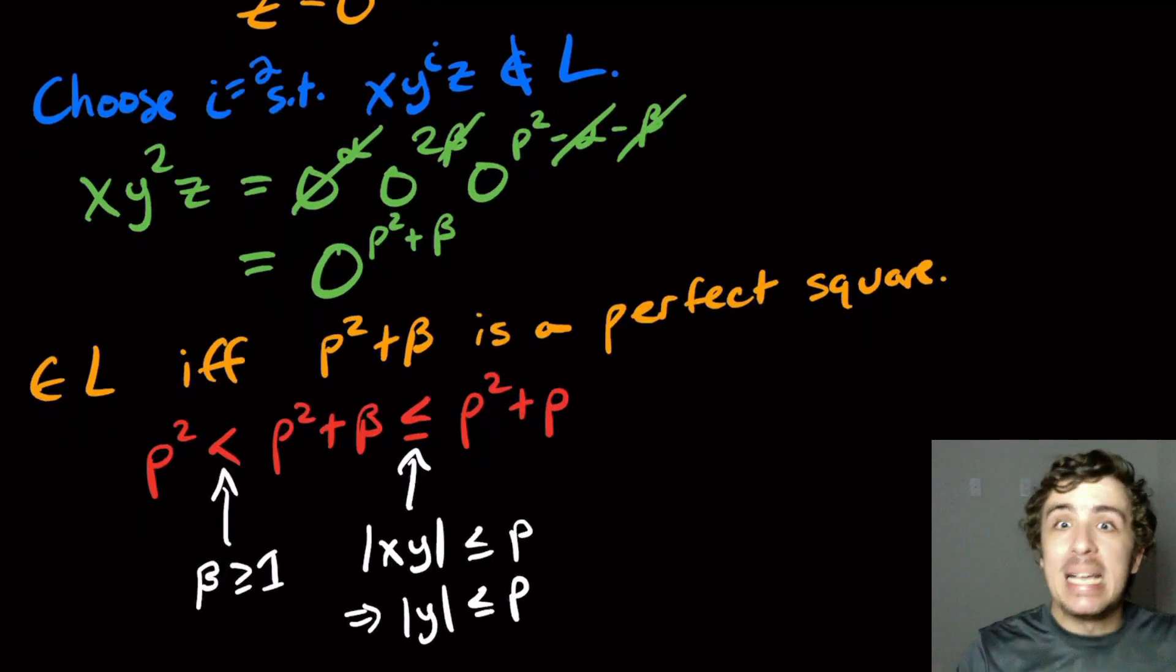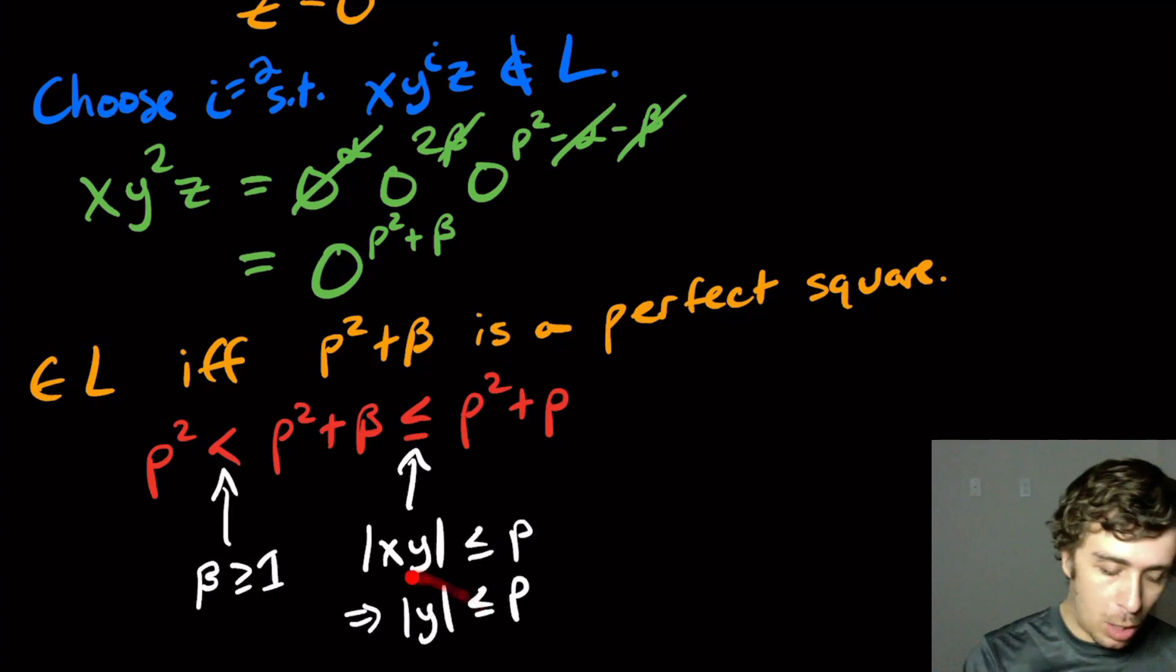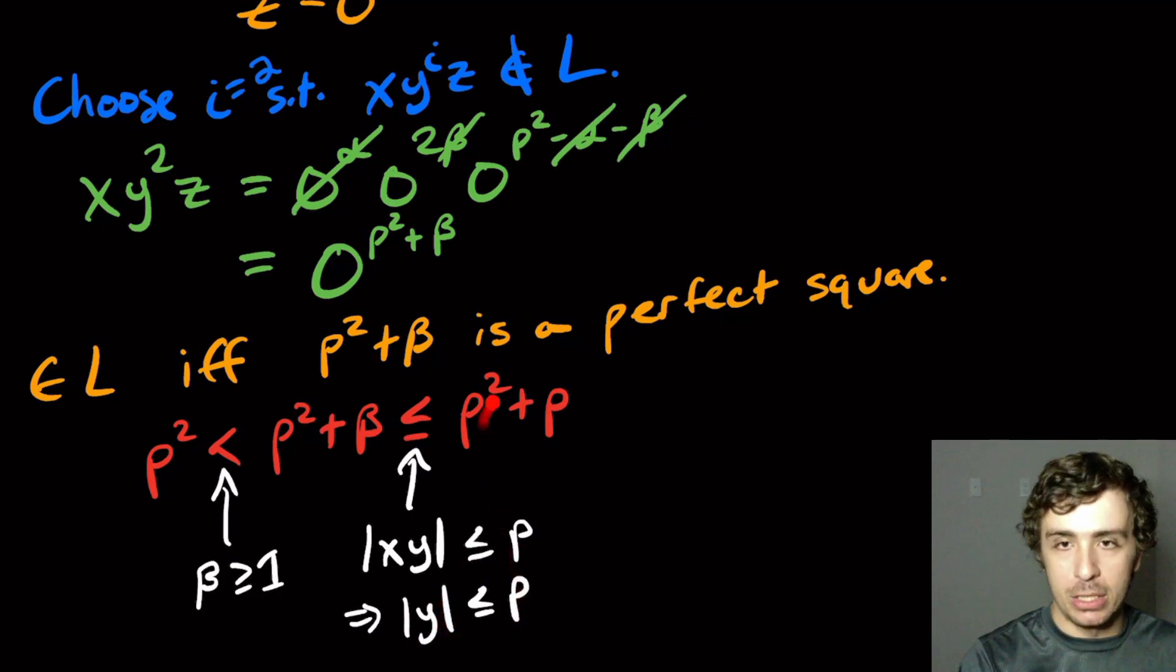And the length of y is beta. So the largest that the length of y could ever be is p characters. So this thing is at most this. It could be a lot less, but it's certainly at most this.